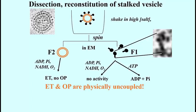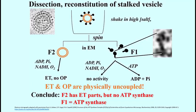So electron transport can be physically uncoupled from what is likely to be oxidative phosphorylation. Racker concluded that it was the F2 vesicle fraction that contained the electron transport bits, and then correctly surmised that the F1 ATPase lollipop particle was really an ATP synthase, but only when coupled to the electron transport system.